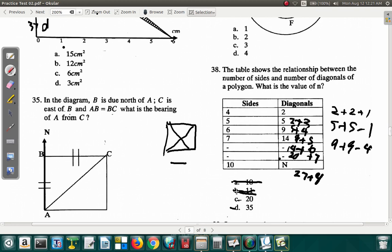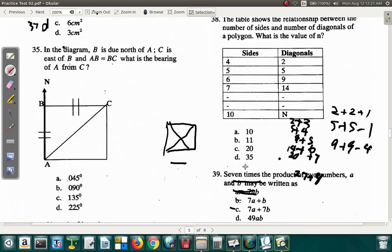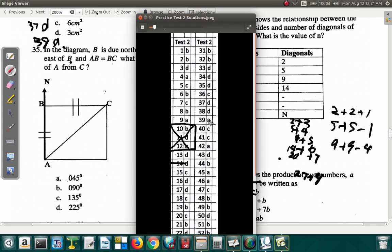So question 38 seems to be D. Question 38 is D. 37 was D, correct.